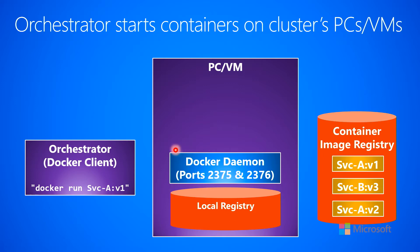If you're using Docker containers — Docker is the technology for deploying containers — then you would have a Docker daemon or some kind of daemon or agent running on this machine. The Docker daemon typically listens on ports 2375 and 2376 for network requests coming in to tell the daemon what to do.